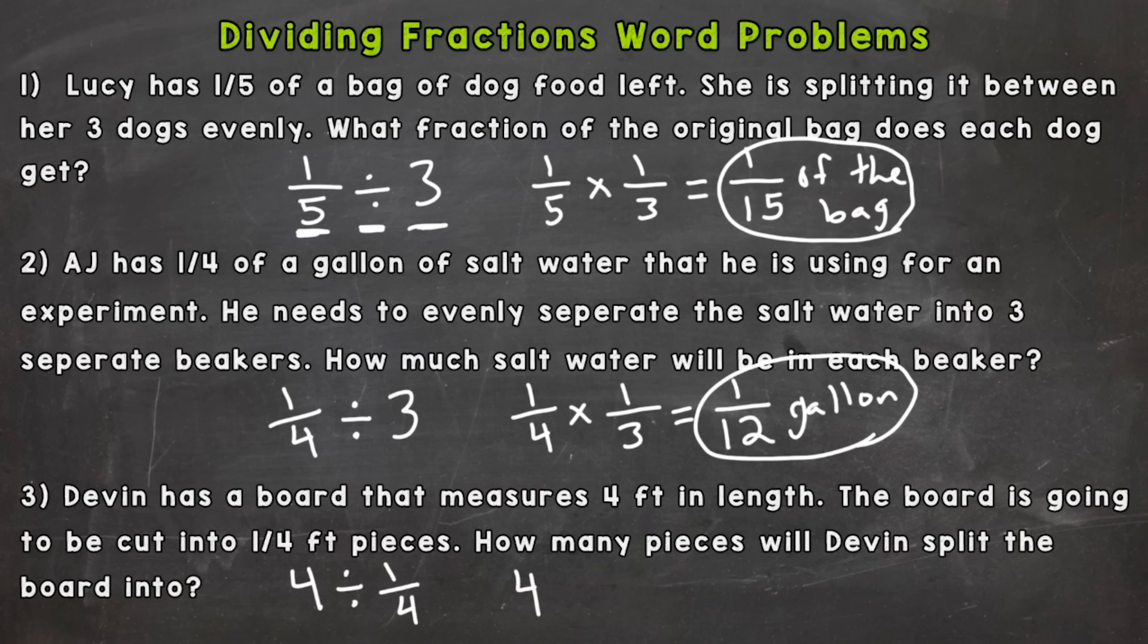Keep, switch, and flip. And both of these whole numbers we can put over one so we have a top and a bottom. Four times four is sixteen, one times one is one, which sixteen over one is just a whole sixteen. So how many pieces will Devon split the board into? Well sixteen pieces.